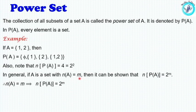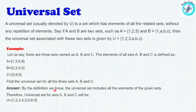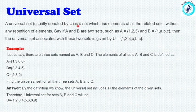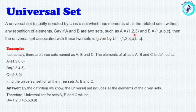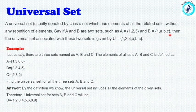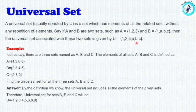This is the universal set. A universal set, usually denoted by U, is a set which has all the elements of all related sets without any repetition of elements. For example, if A is {1, 2, 3} and B is {1, A, B, C}, then the universal set is U = {1, 2, 3, A, B, C}.